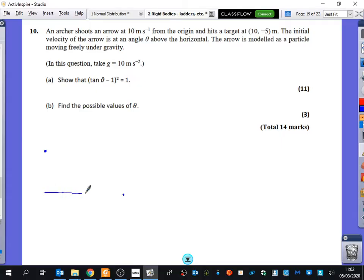So I already know something - that that distance there is 10 and that distance there is 5. And the initial velocity of the arrow is at an angle theta. The arrow is modelled as, and we know it's 10, modelled as a particle moving freely under gravity. So we know that this bit running along the bottom is 10 cos theta, running along the side is 10 sin theta.